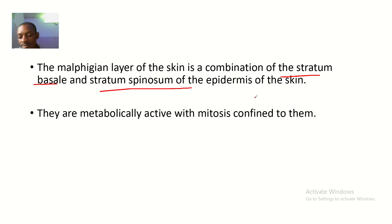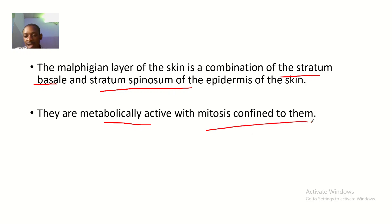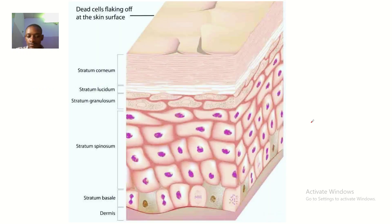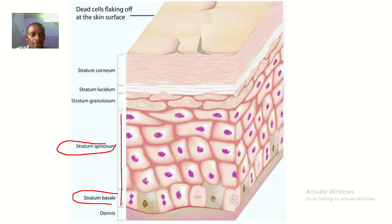These two components of the Malpighian layer are metabolically active, with mitosis confined to them. This is the stratum basale and this is the stratum spinosum — joining these two strata together gives you the Malpighian layer of the epidermis of the skin.